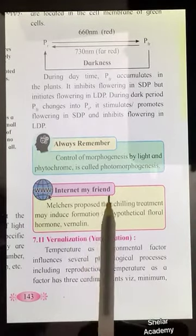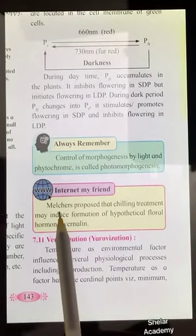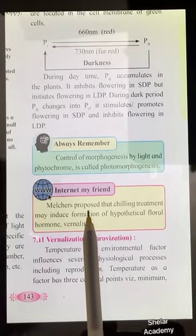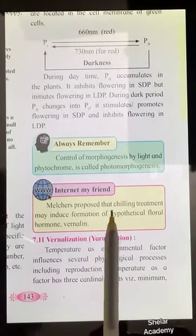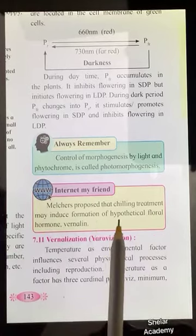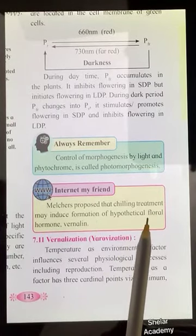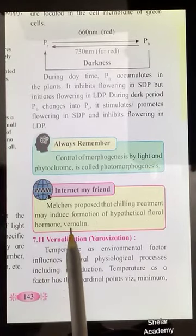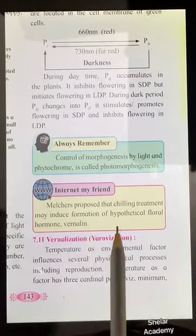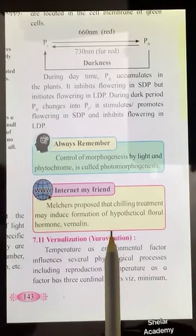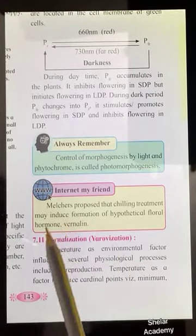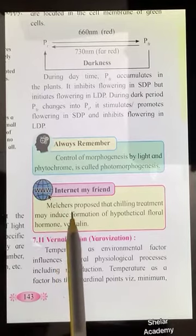Melchers is the scientist who proposed that chilling treatment may induce the formation of a hypothetical floral hormone called vernalin. We will now move on to the next concept, which is vernalization.